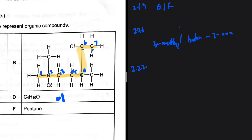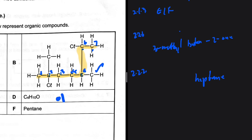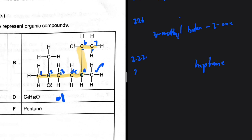We need to number carbons from the side that gives the smallest locants. Starting from the left, on the second carbon we have a chloro substituent and a methyl. Further along on the fifth carbon there's another methyl. Between methyl and chloro we list chloro first alphabetically. So we get 2-chloro-2,5-dimethylheptane.